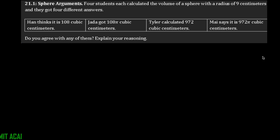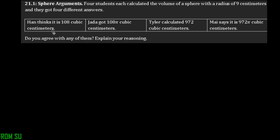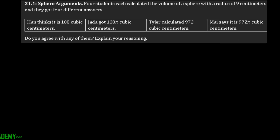For the first part, four students each calculated the volume of a sphere with a radius of nine centimeters and got four different answers. Han thinks it is 100 cubic centimeters, Jada got 108 cubic centimeters, Tyler got 972 cubic centimeters, and Mai says it is 972 pi cubic centimeters.